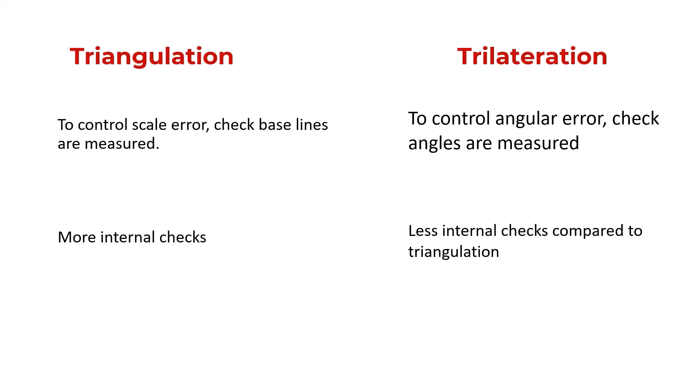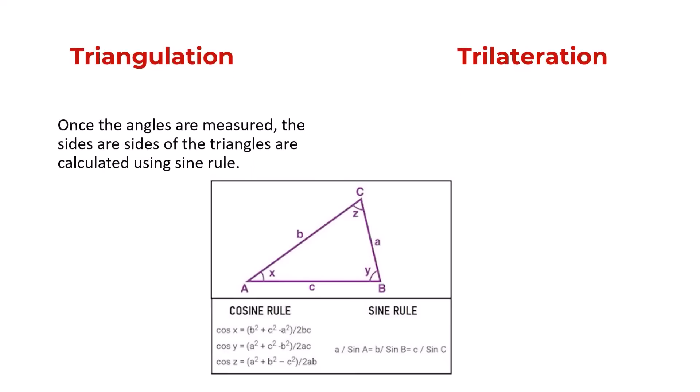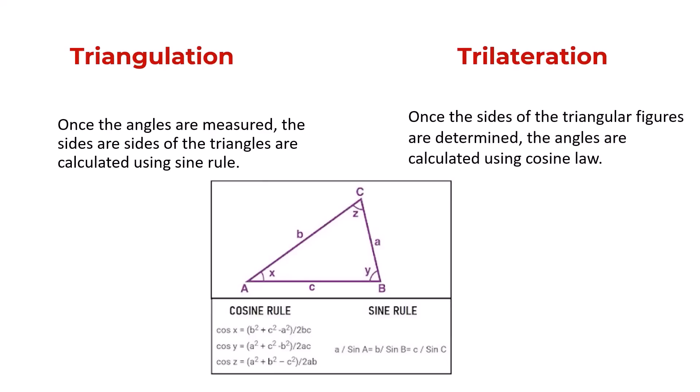Once the angles are measured, the sides of the triangles are calculated using the sine rule for the triangulation method. In the case of trilateration, we determine the sides of the triangular figures using the instrument and the angles are measured or calculated using the cosine rule.